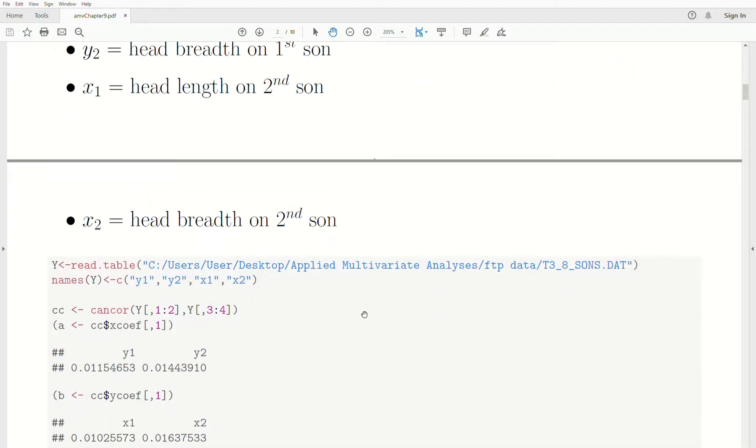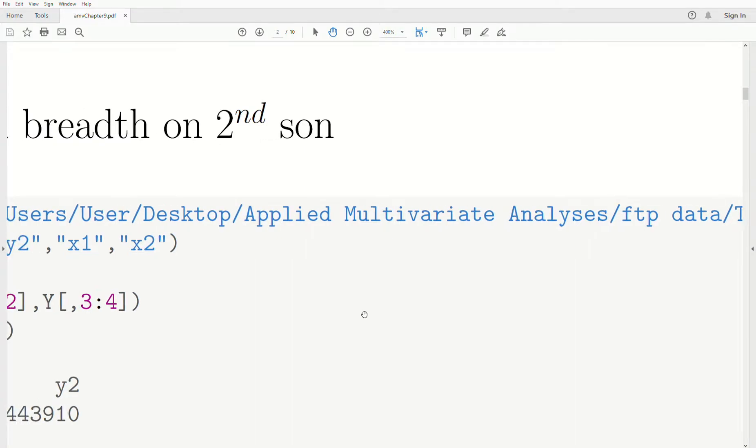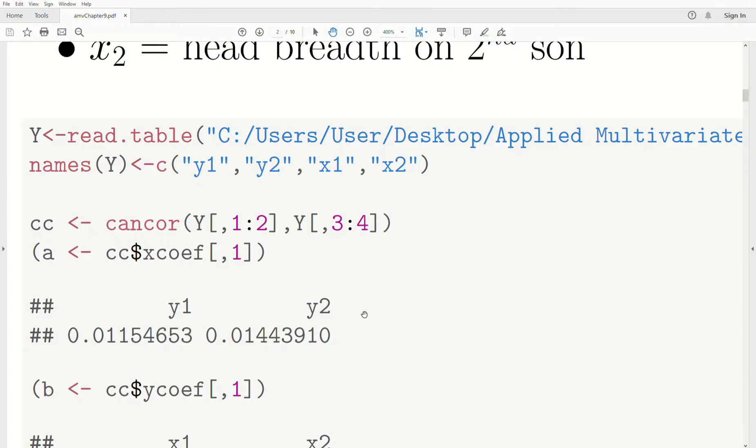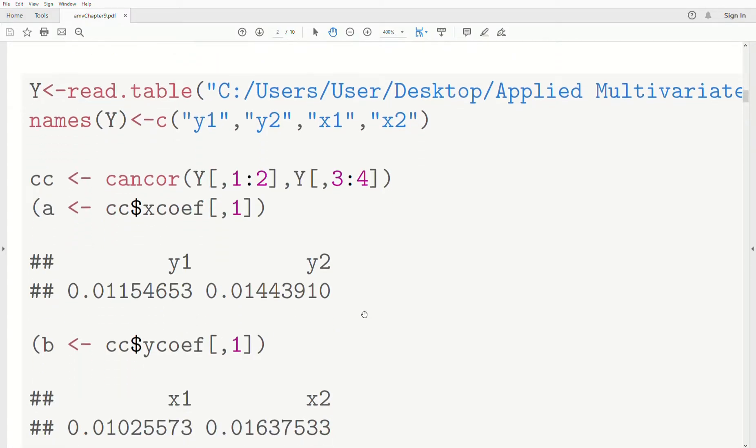Now we read the data in and it doesn't come with a header row, so we have to name the variables. And this function can core, which we'll cover in more detail in the second video, that's going to be the workhorse function for this chapter. And we say can core, and we have the first two variables here, the first sun, and the second set of variables, the second sun.